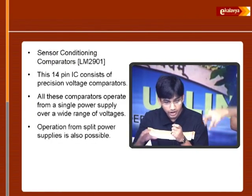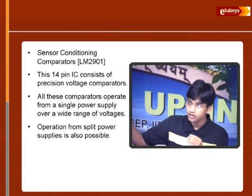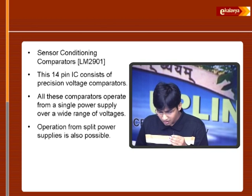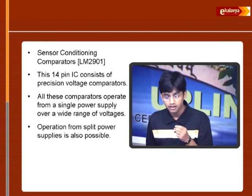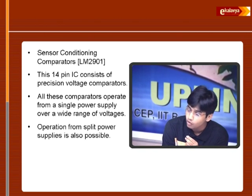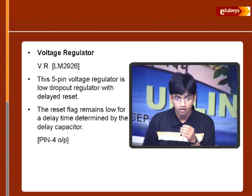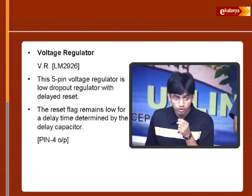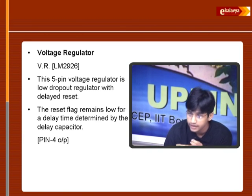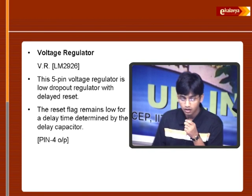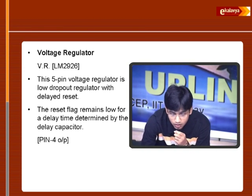The sensor conditioning comparators compare the sensor outputs given by each rear wheel and front wheel. A good feature is that they can be driven from a single power supply, and a split power supply can also be used. The voltage regulator receives an unregulated battery input. It is a load-rapport voltage regulator with a delayed reset, given by the delay capacitor as shown at pin 4 of the circuit diagram.